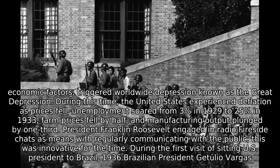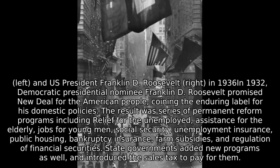President Franklin Roosevelt engaged in radio fireside chats as a means of regularly communicating with the public — this was innovative for the time. In 1932, Democratic presidential nominee Franklin D. Roosevelt promised his New Deal for the American people, coining the enduring label for his domestic policies. The result was a series of permanent reform programs including relief for the unemployed, assistance for the elderly, jobs for young men, social security, unemployment insurance, public housing, bankruptcy insurance, farm subsidies, and regulation of financial securities.